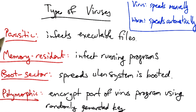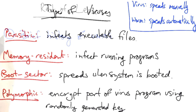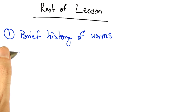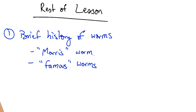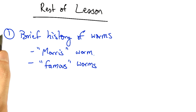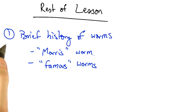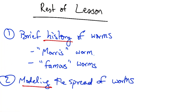A worm might use any of these techniques to infect a particular host before spreading further. In the rest of the lesson, we will first talk about a brief history of internet worms, including the first internet worm called the Morris worm, and other famous internet worms from the early days of internet worms in the early 2000s, including Code Red and other well-known internet worms of the time.